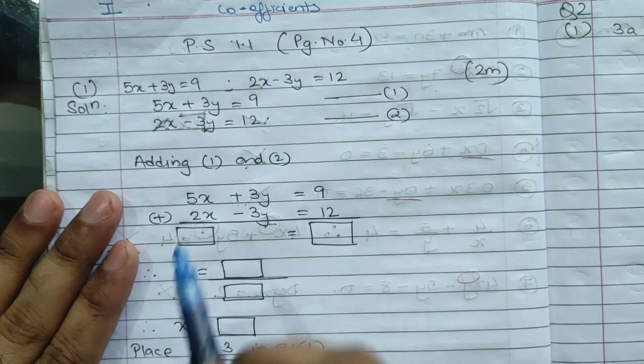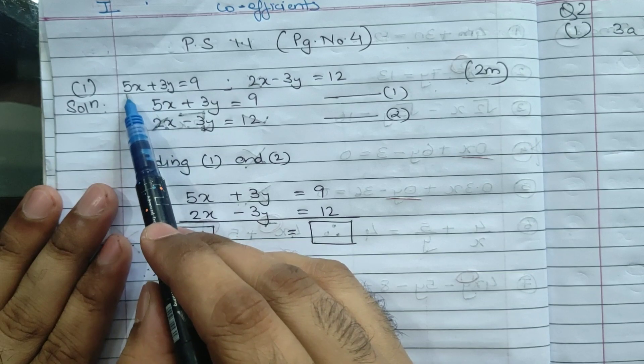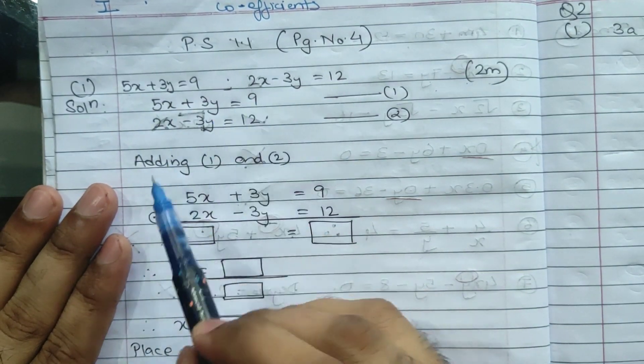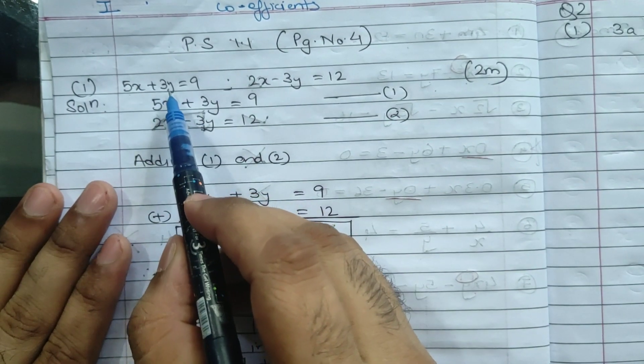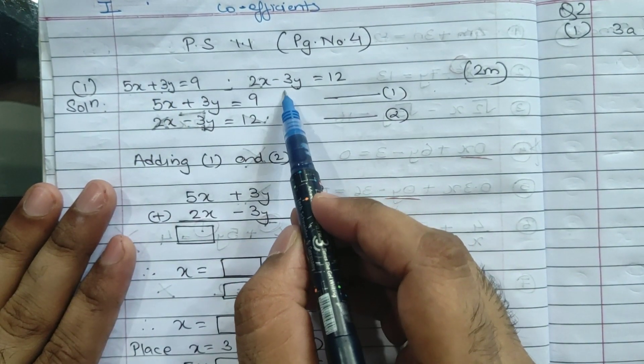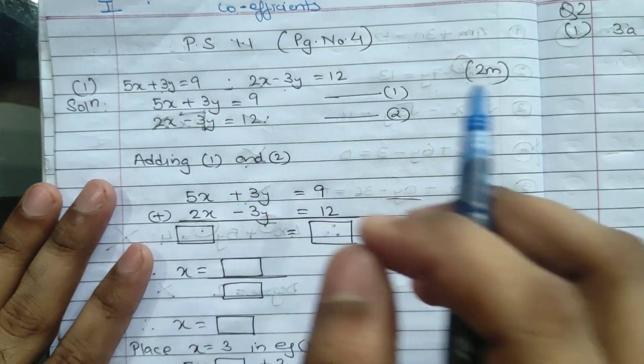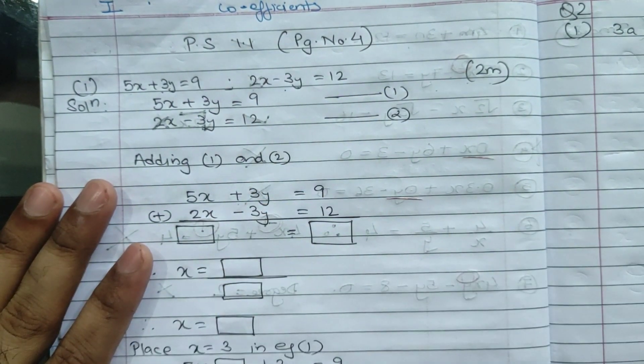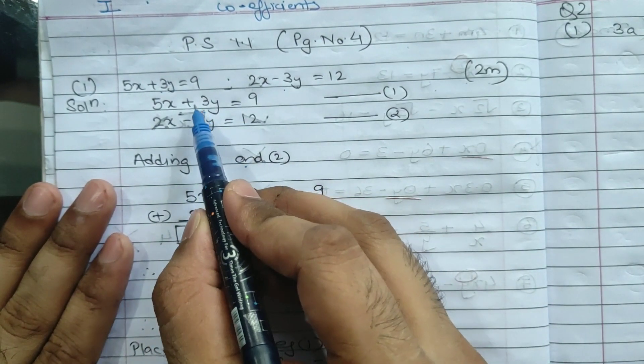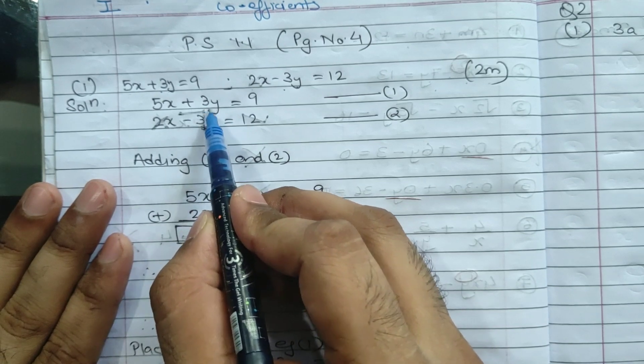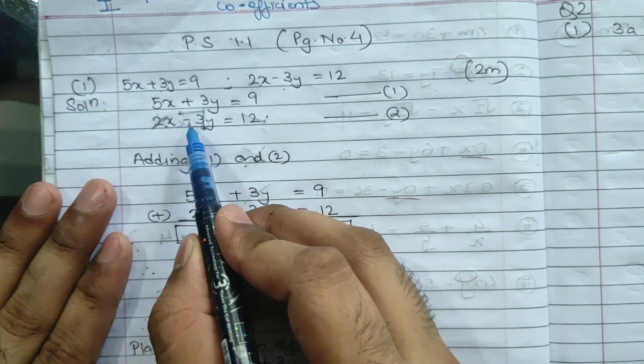First we'll write the equation as it is. So 5x plus 3y equals 9, equation 1. 2x minus 3y equals 12, equation 2. We'll be adding equations 1 and 2. Let's look carefully at the coefficients. Here x coefficient is 5, here x coefficient is 2. But y's coefficient - here it's 3, here it's also 3.